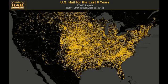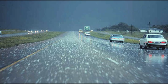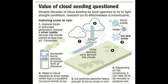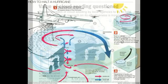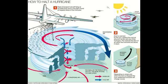Cloud seeding directly impacts the economy by increasing rainfall and crop yield, and also by reducing hail damage. However, the economic risks of cloud seeding are huge — you can't bet on nature or try to control it.